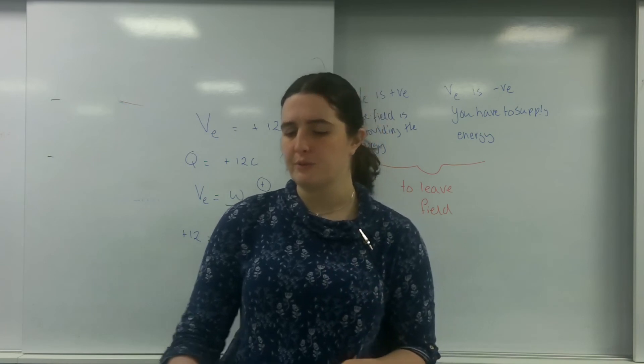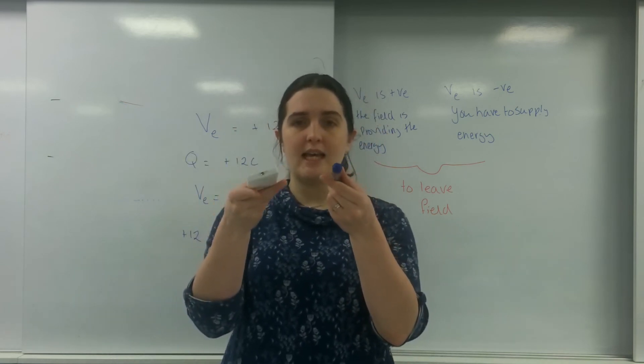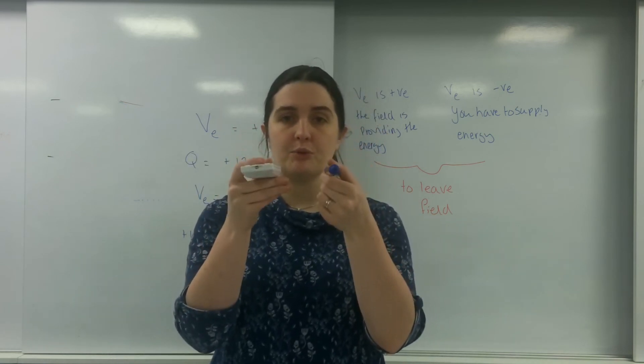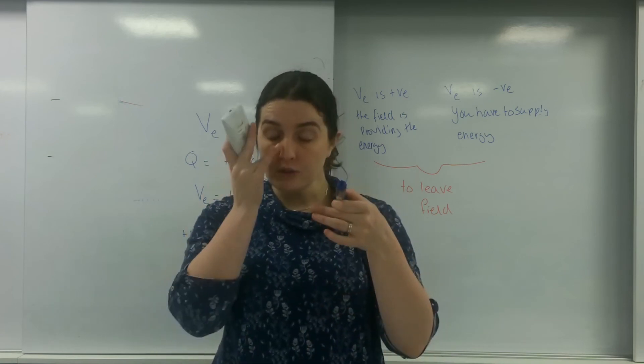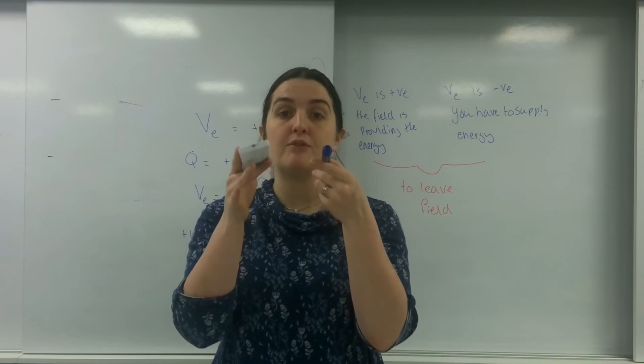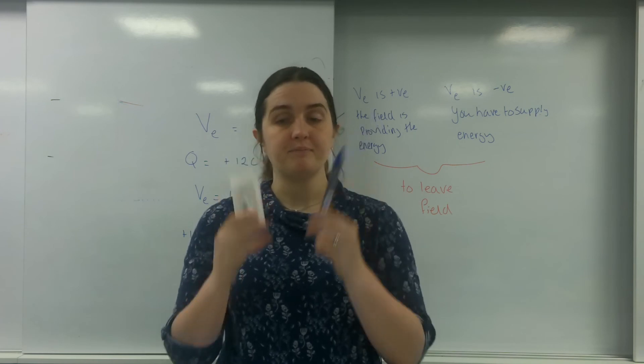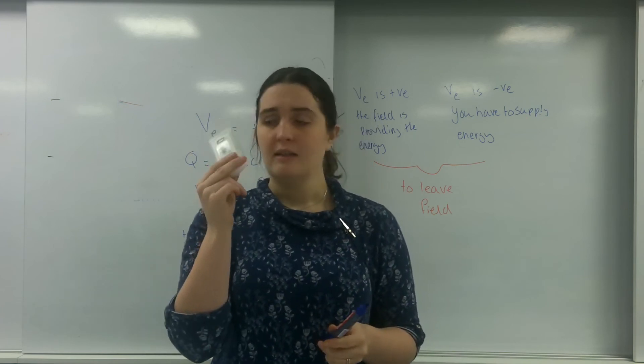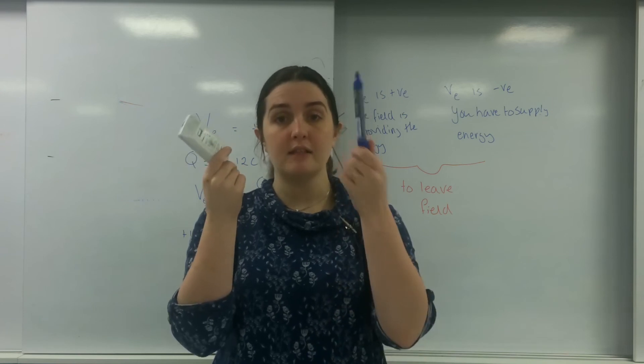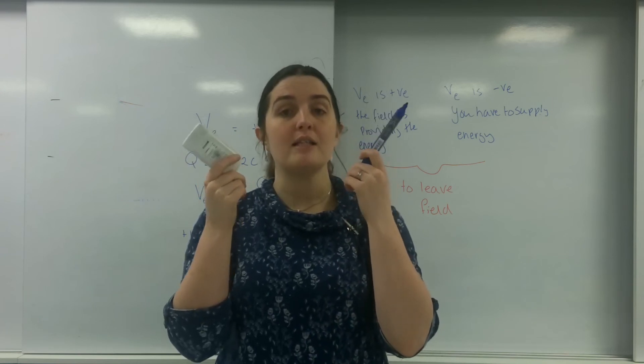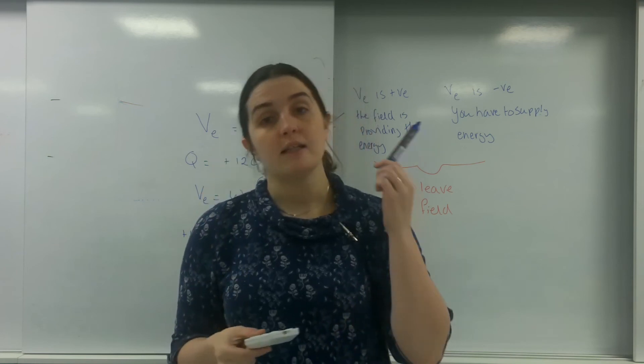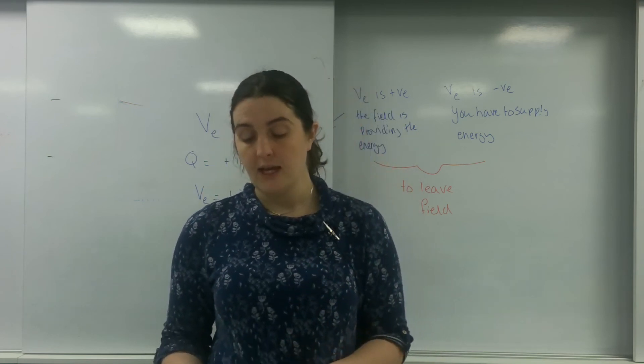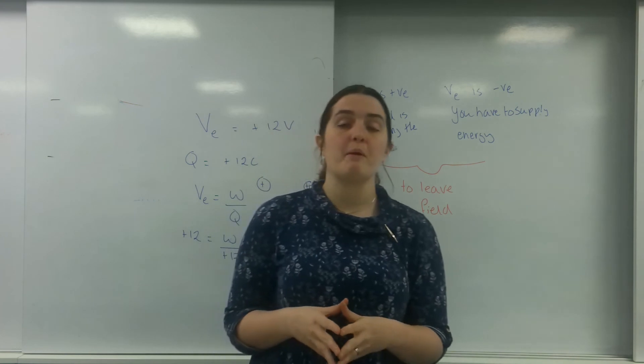So just as a quick recap in terms of gravitational fields, these two objects here have the same potential from the Earth's gravitational field because they're in the same position in the field. However, this one is smaller and lighter than this one. So individually, this one's going to need more energy to leave the field than this one. So this is the important thing about potential.